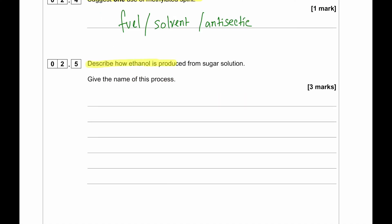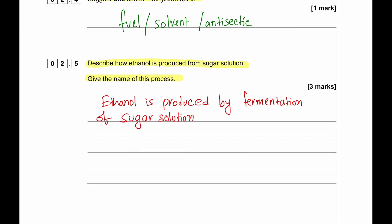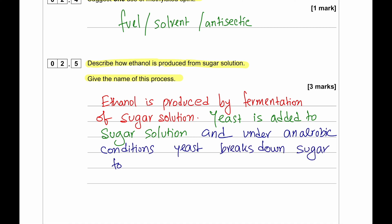Describe how ethanol is produced from sugar solution. Give the name of this process. Ethanol is produced by the fermentation of sugar. And to produce ethanol, yeast is added to the sugar solution and in anaerobic condition, it is heated so that ethanol is produced.